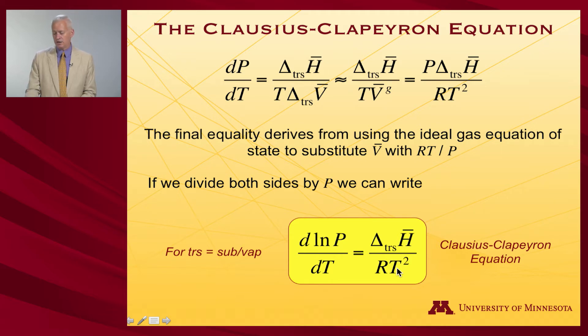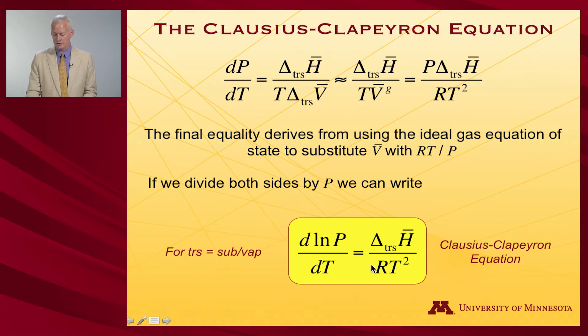The Clausius-Clapeyron equation is appropriate to be applied to transitions where you have to make a gas — so it's good for sublimation and it's good for vaporization.